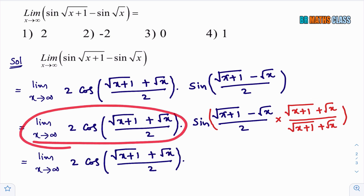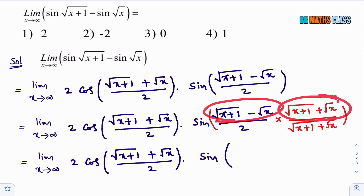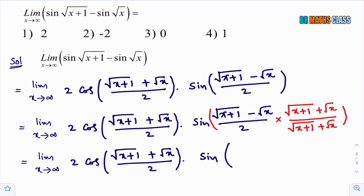This part I write as it is. If you simplify, you multiply these two — it is of the form (a plus b) into (a minus b), which equals a squared minus b squared. So what you will get in the numerator is x plus 1 minus x. The x's cancel, leaving 1. So in the numerator you get 1, divided by 2 into, in the denominator, root over (x plus 1) plus root x.